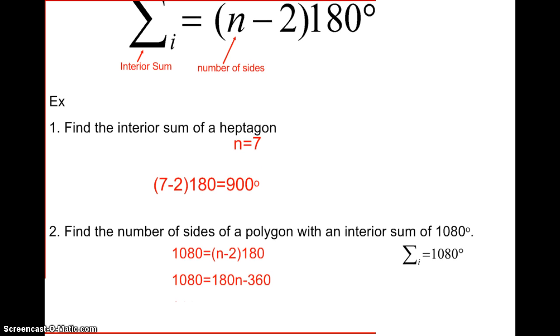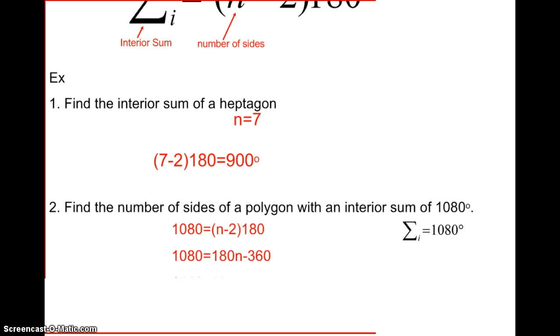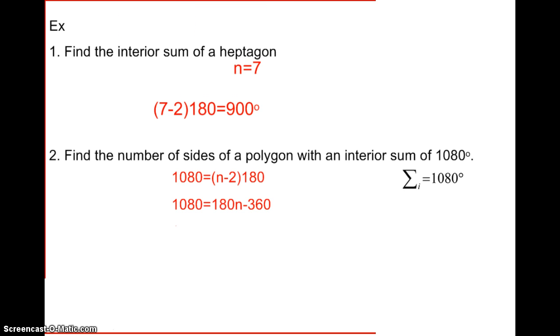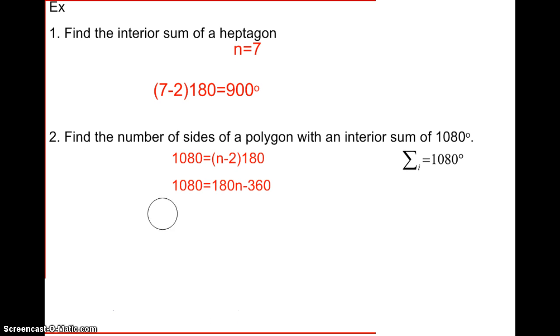So we have 1080 equals 180n minus 360. And then we are going to add 360 to the other side. So we have 1440 equals 180n. So we find out that we have an octagon. We have 8 sides.